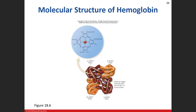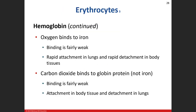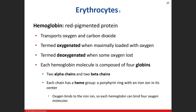We can see two different protein chains, each with a heme group attached, and at the center of each heme group is iron. We need iron to have properly functioning hemoglobin, because that's where oxygen binds.